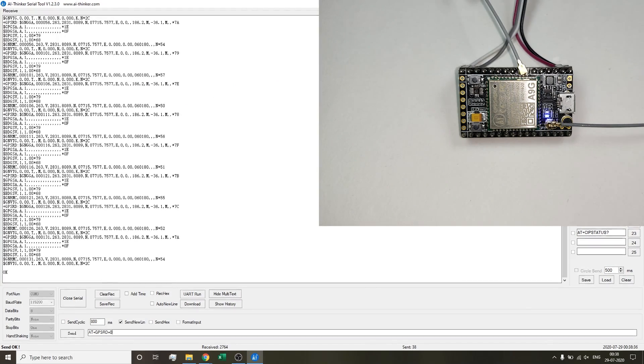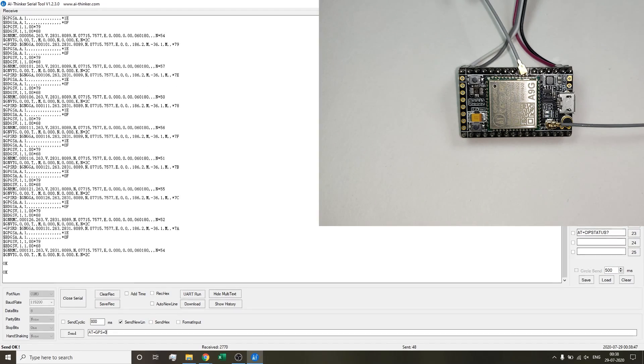To stop this, you just need to send AT+GPSRD=0. This will stop the data. I've sent that and it says OK. To switch off the GPS, you need to again write the command AT+GPS=0. As soon as I type this command, we will see that the bottom LED stops blinking. The top LED is for GSM and GPRS.